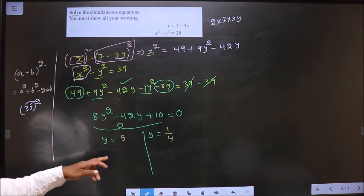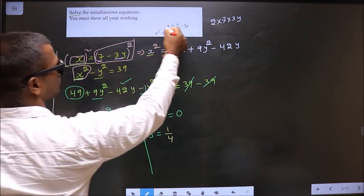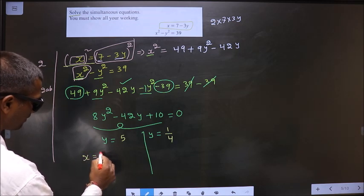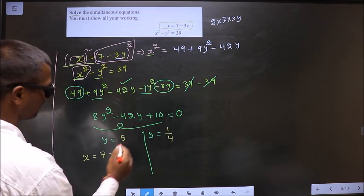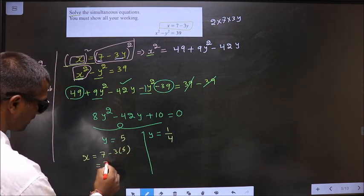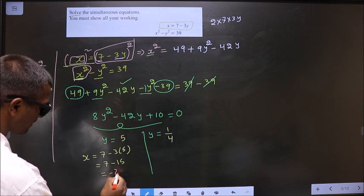So, now to get x, replace y in this equation. So, x equal to 7 minus 3 times of 5. So, that is equal to 7 minus 15. So, that is minus 8.